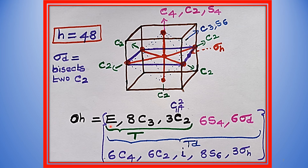In addition to the T group operations, the Oh point group has these additional symmetry operations. The order of the octahedral Oh point group is 48 — meaning there are 48 symmetry operations in total.